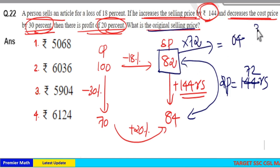16 plus 14 is 30. Remaining 3, 8 into 7, 56. 56 plus 3 is 59. So, option 3 is your answer.